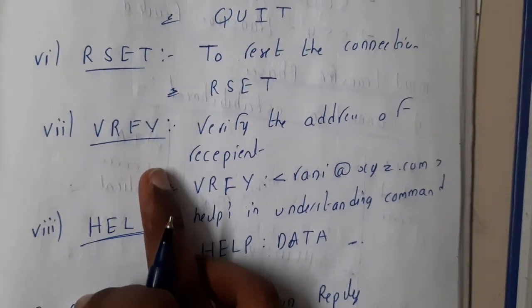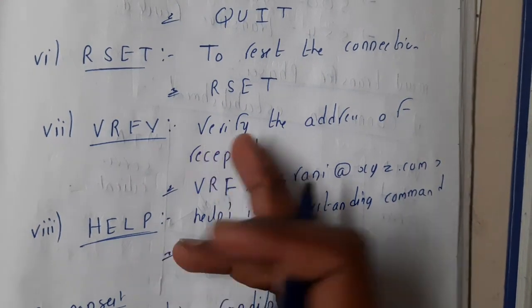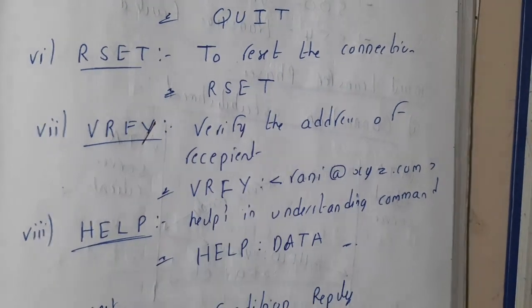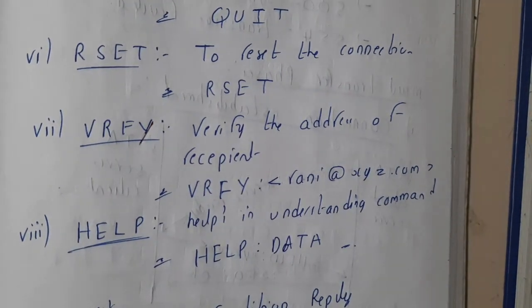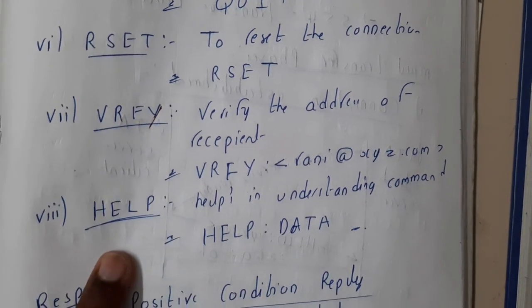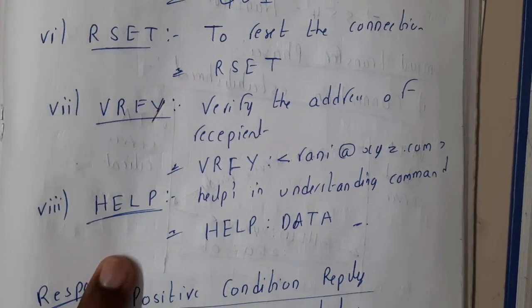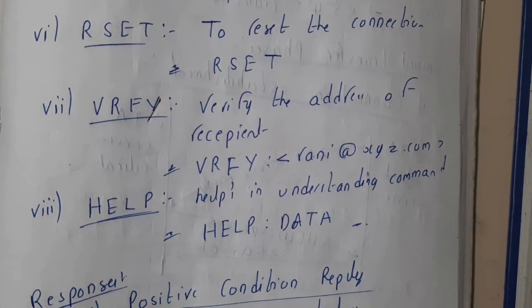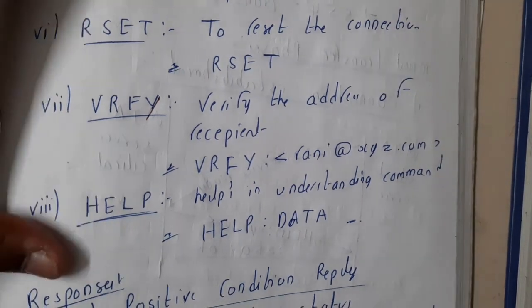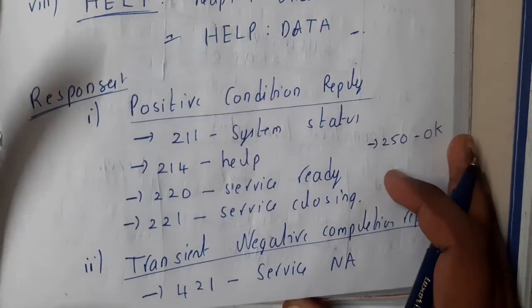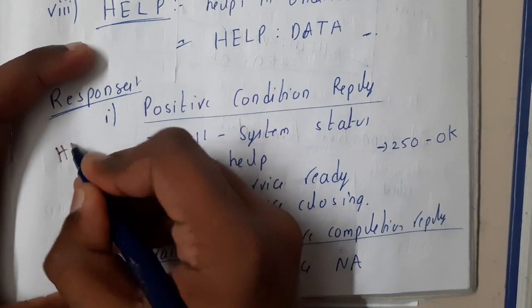VRFY is used to verify the recipient — to confirm whom you are sending to. HELP is used whenever there is any kind of issue to get assistance. These are the main SMTP commands.